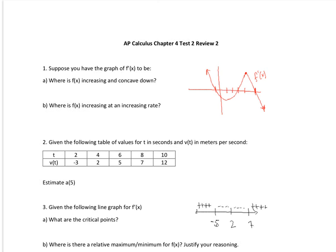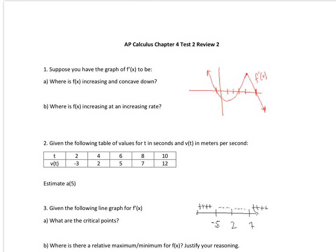Alright, so on this first question, it says: suppose you have the graph of f prime of x, and we're looking at this, and we want to know where f of x, the original, is increasing and concave down. Remember that we are looking at a derivative graph. So for it to be increasing, we want f prime to be above the axes, because I am looking for f prime to be greater than 0.